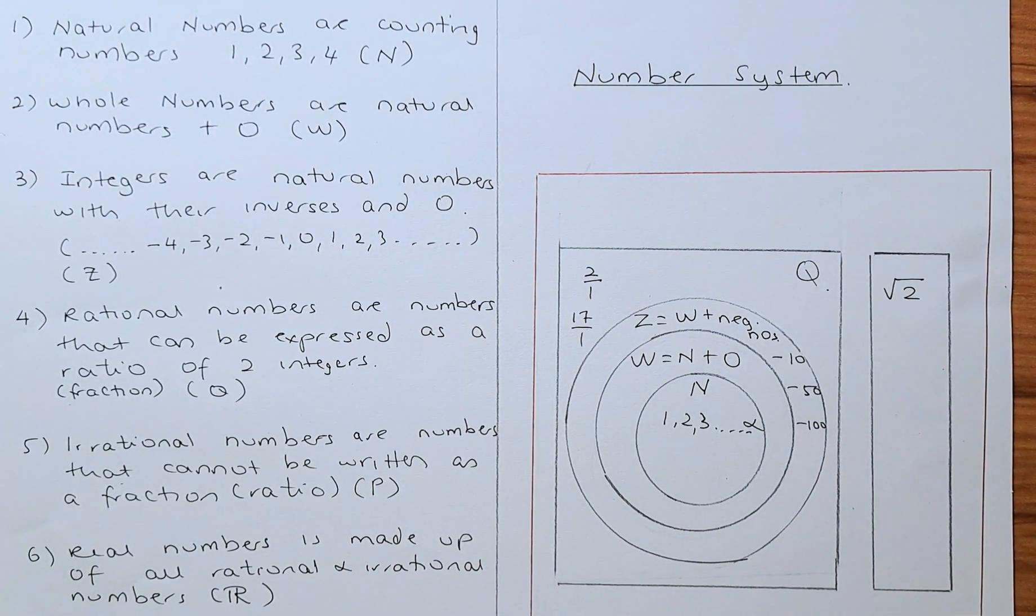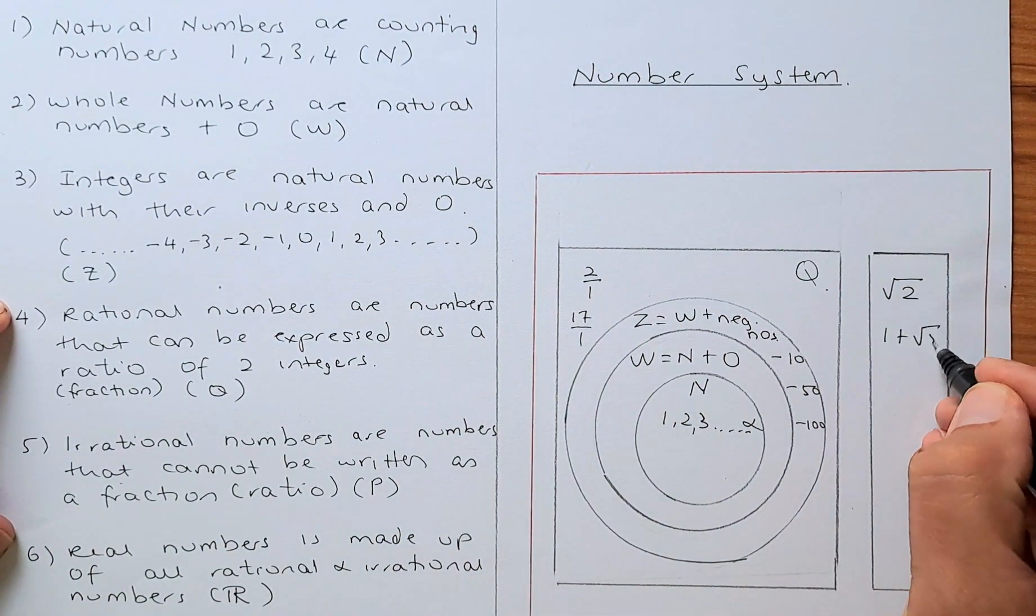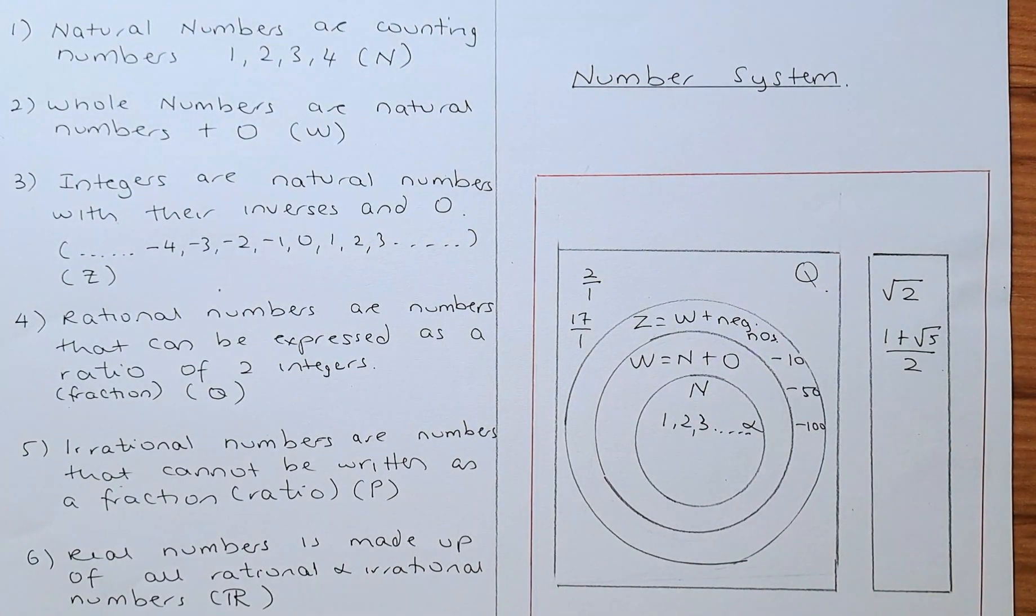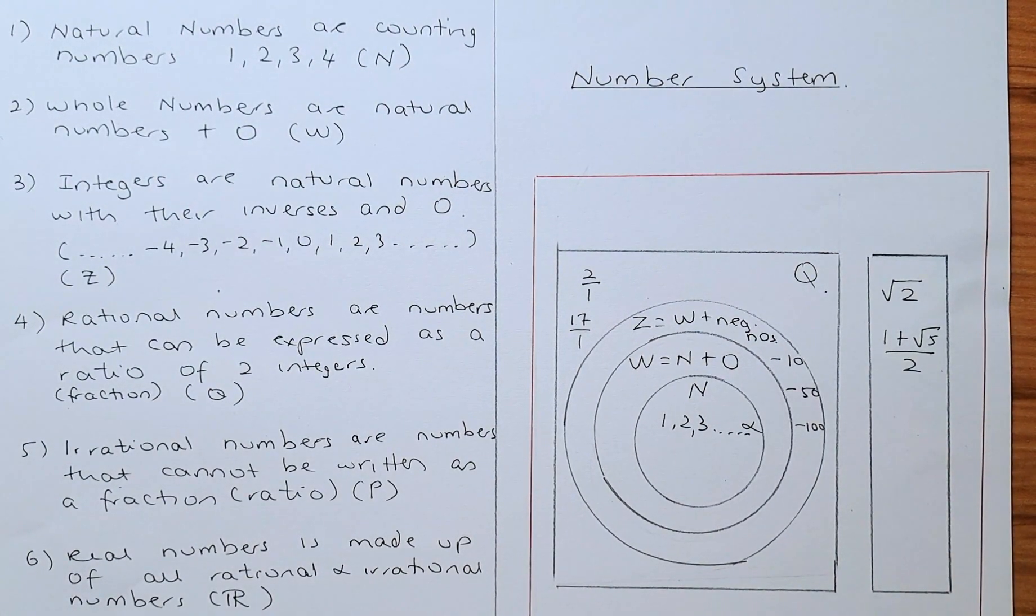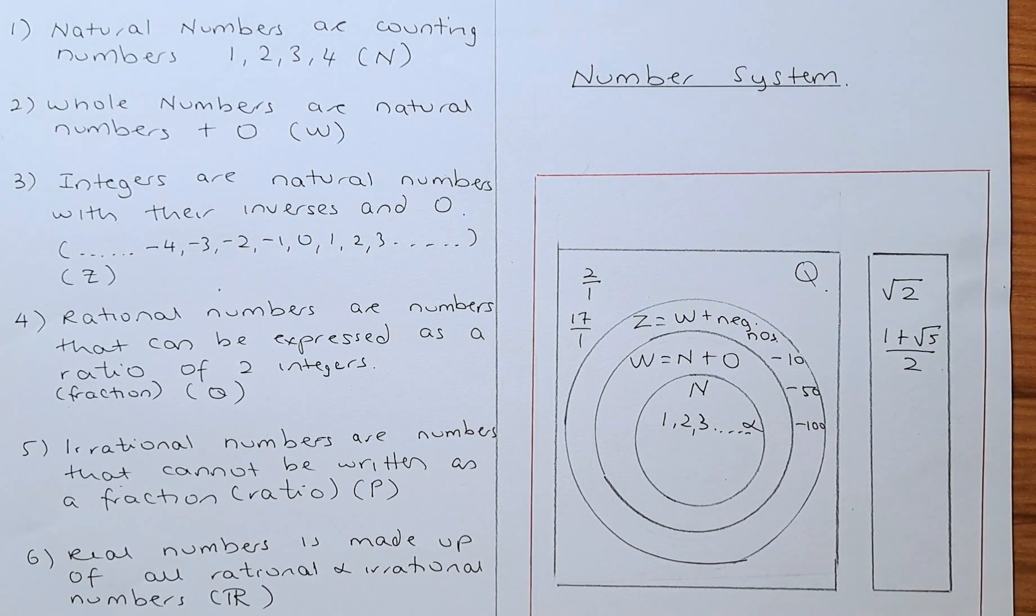Similarly, you have the golden ratio. The golden ratio is 1 plus root 5 over 2, which equals 1.61803988 and carries on and on - it never stops. So that also is an irrational number.